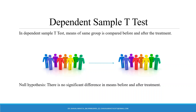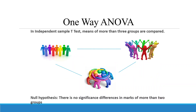I request all my viewers to kindly refer to my previous videos to understand the flow of this lecture series. In this video, we are going to discuss one-way ANOVA. Basically, when we want to compare more than two groups, each group having a different identity, we use one-way ANOVA.